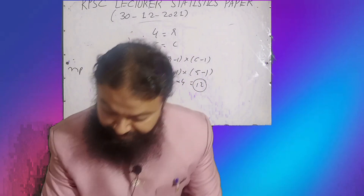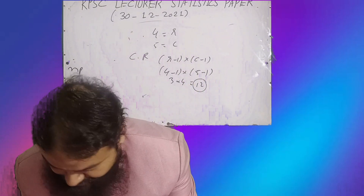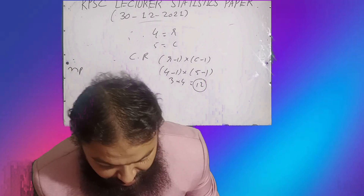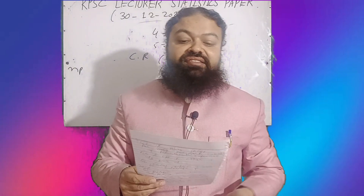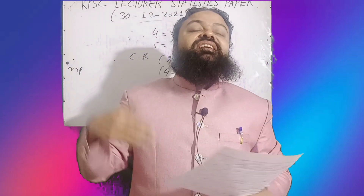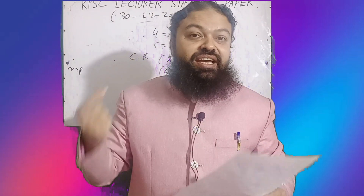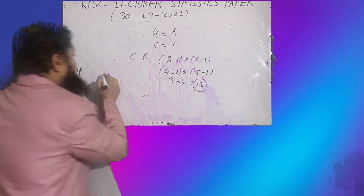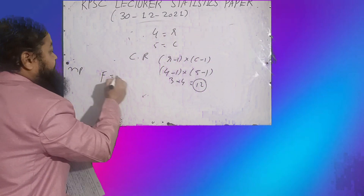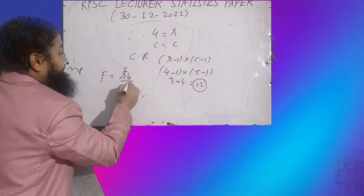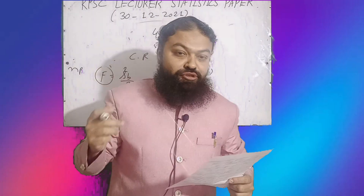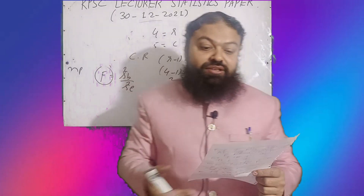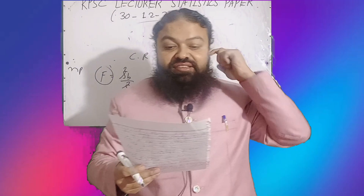The next question: the distribution of the test statistic in single-factor ANOVA is the F-test. We find the ratio of s²_B over s²_E. The F-test is the correct option for the distribution of the test statistic in single-factor ANOVA.